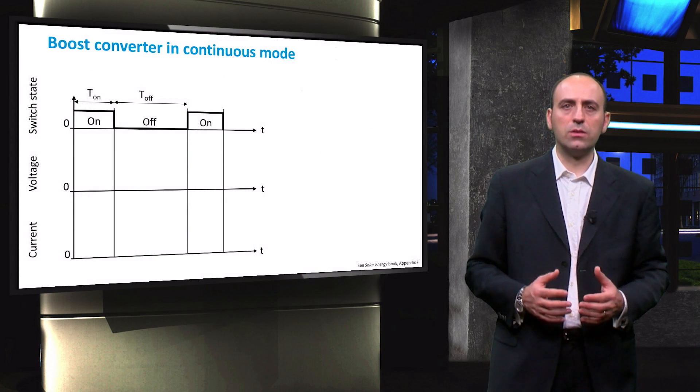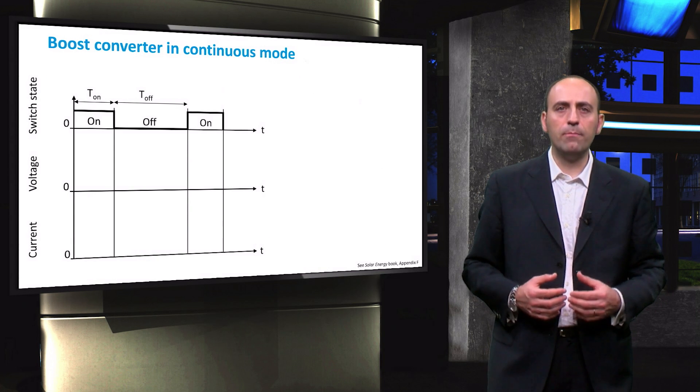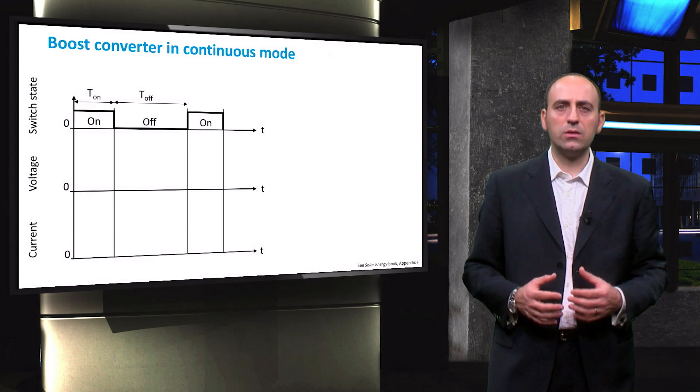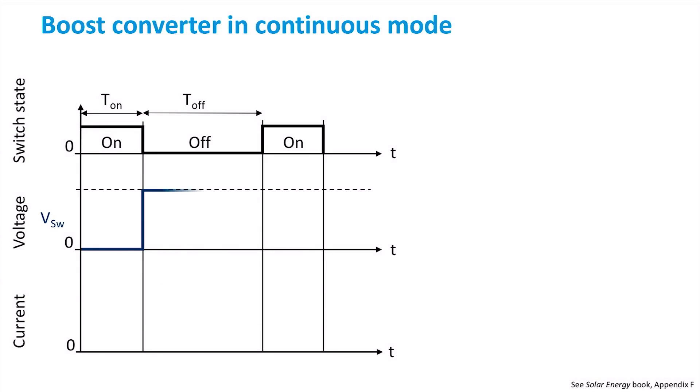Now that we understand how the network works during ON and OFF modes, we will combine them and build the voltage and current signals during one entire cycle. In blue, the voltage across the switch is depicted. It is zero when the switch is closed and reaches the output voltage value during OFF operation.